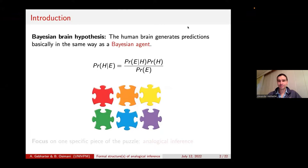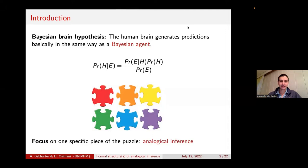We have a couple of hypotheses we might be interested in. We might want to reason about, assign prior probabilities, and then through our senses, new evidence comes in and we update our probabilities according to Bayes' theory. There are many questions and problems connected with that hypothesis, but here in this talk we focus on a very specific piece of the puzzle: namely how we could understand analogical inference against the background of a Bayesian approach.